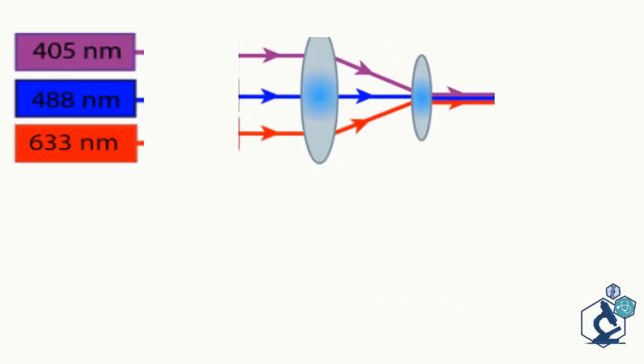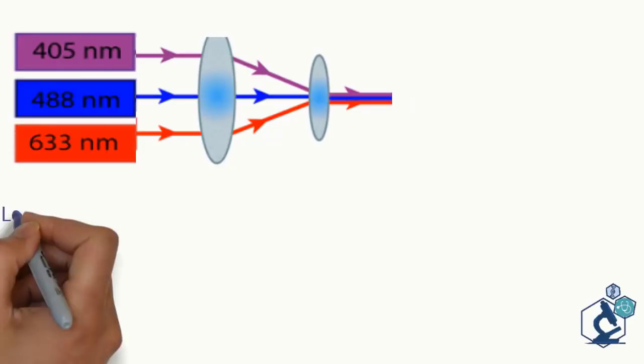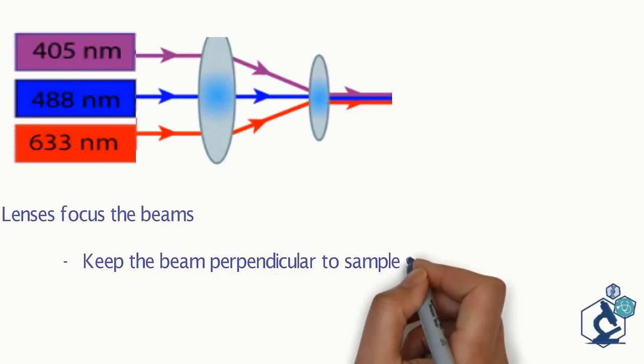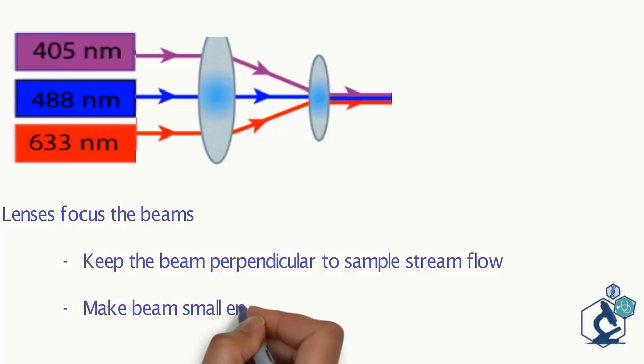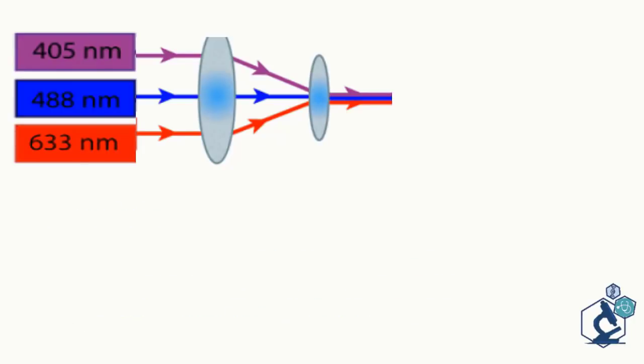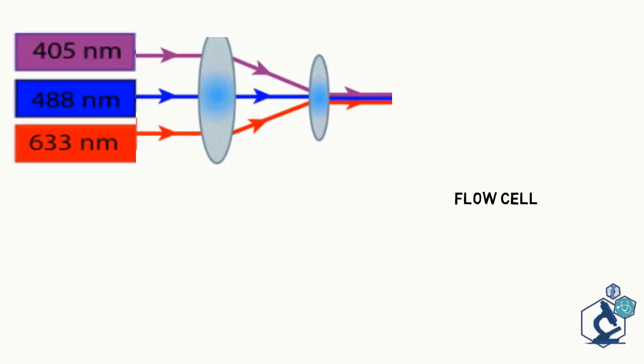Before the laser beams reach the sample stream, cross cylindrical lenses focus the beams. Focusing keeps the beam perpendicular to the sample stream flow while making the beam small enough to illuminate only one cell at a time. The first lens controls the width of the beam, the second height. The resulting elliptical beam is focused on the sensing area of the flow cell.